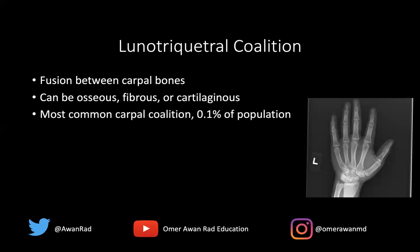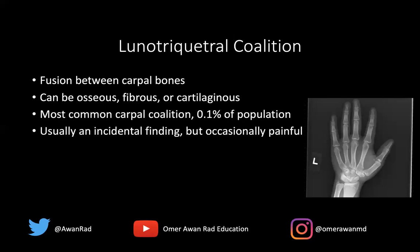This is the most common carpal coalition, yet it's seen in only 0.1 percent of the population. We do see other coalitions, like a capitate-hamate coalition, but by far the most common in the wrist is a lunotriquetral coalition, which is why it's important for all of you to know this.